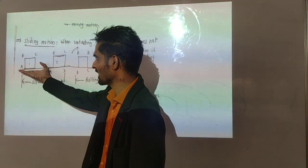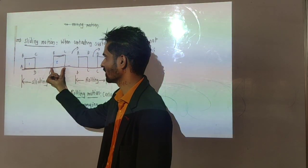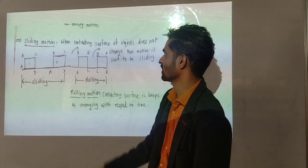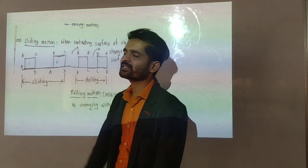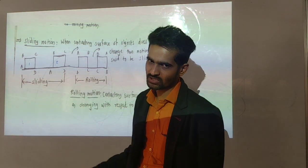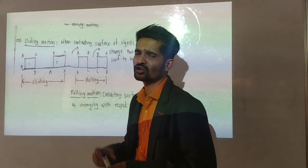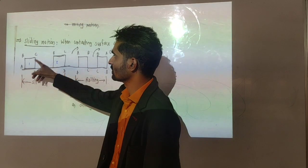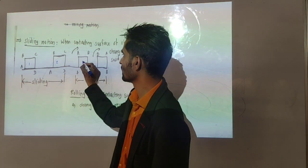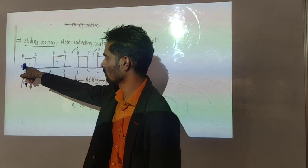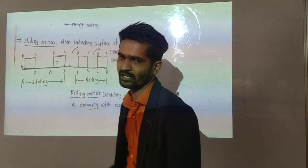It means the contacting surface — the surface of the block touching the ground — is not changed. Whenever the contacting surface of an object is not changed during the motion, then this motion is called sliding motion. When the object is moving from position one to two, this motion is called sliding motion.